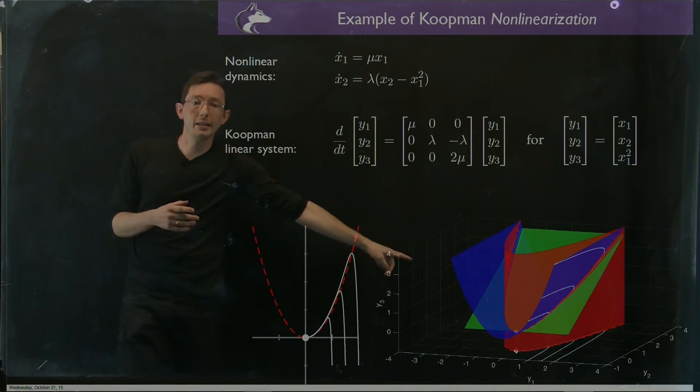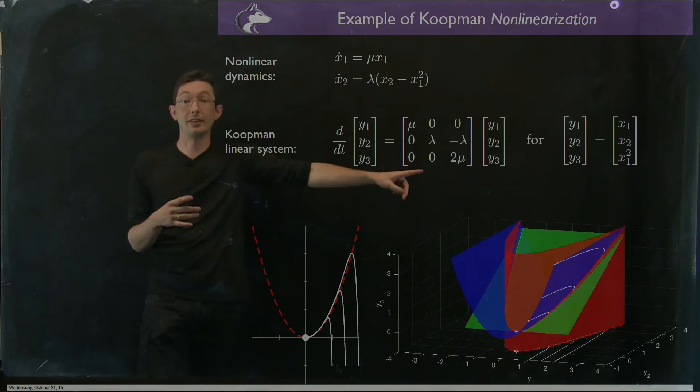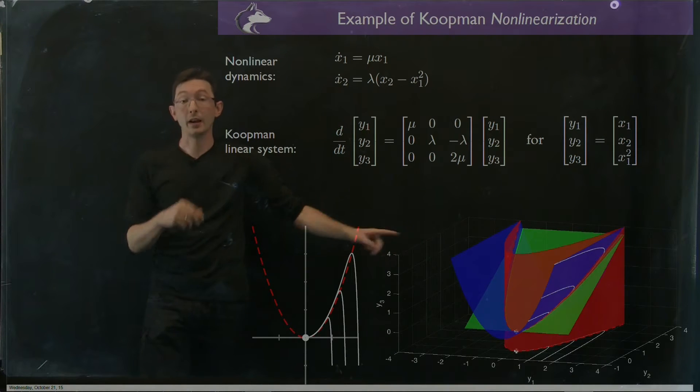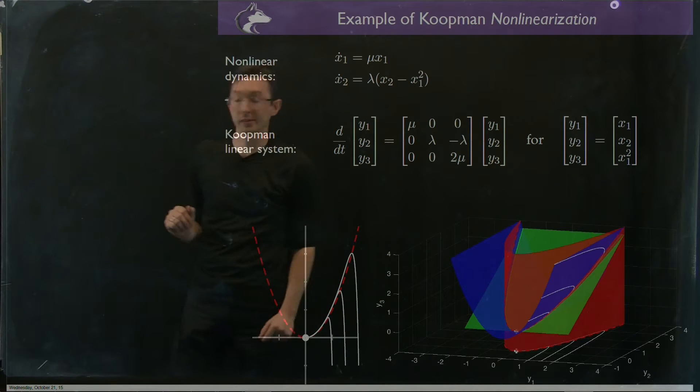So now we're going to dig into this MATLAB a little bit for how we can actually visualize the solution to this Koopman linear system in three dimensions. And I'm going to tell you a little bit about what these different colored manifolds mean.